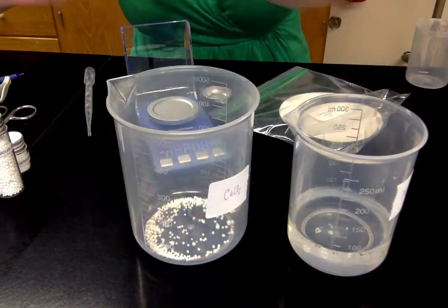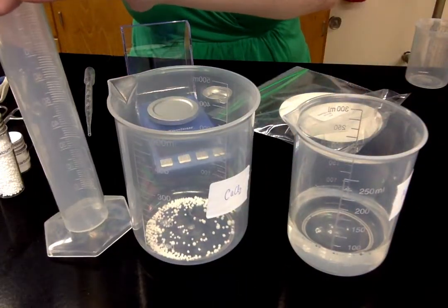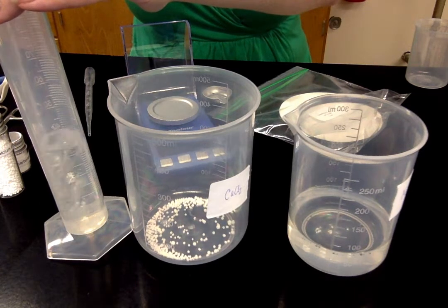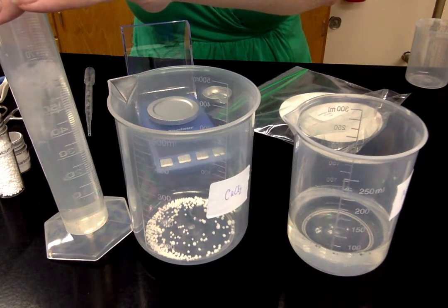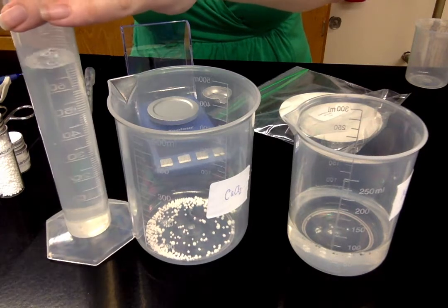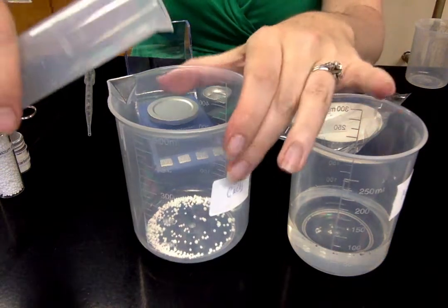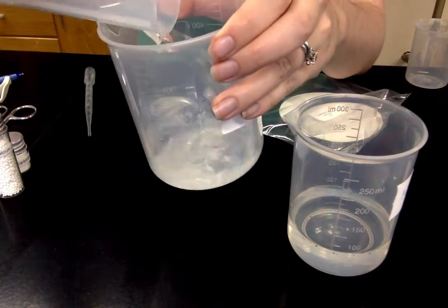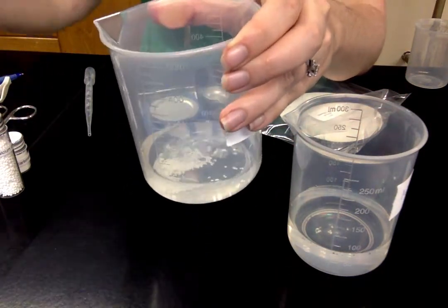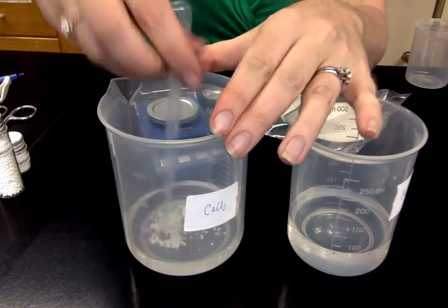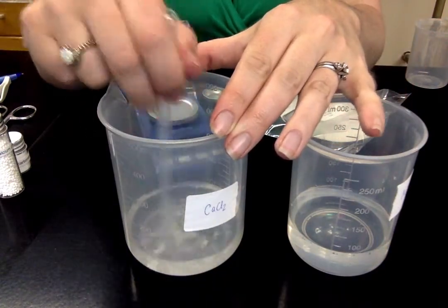And we're going to do the same thing to our calcium chloride. I guess I'll keep these in the screen here. So I've got my graduated cylinder. Putting in 75 milliliters of water. Getting it exactly at 75. And adding this to my solute. And again, I'm going to stir it. Stir it until it is all completely dissolved.